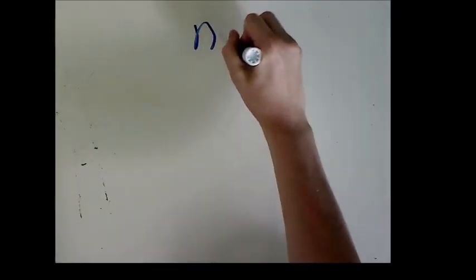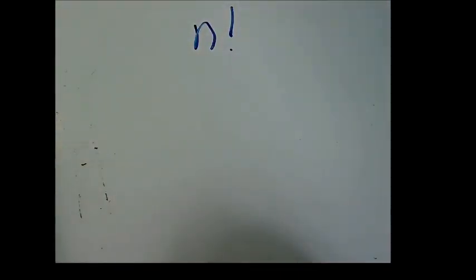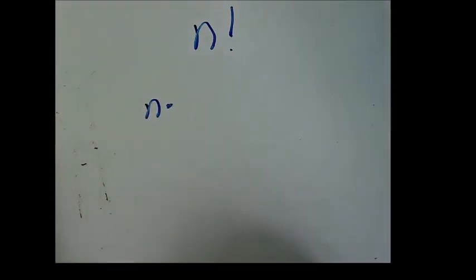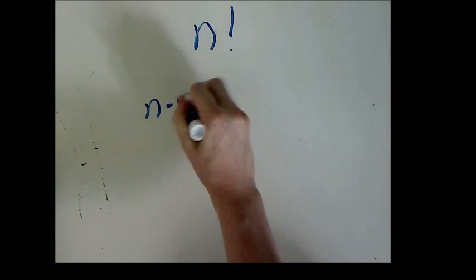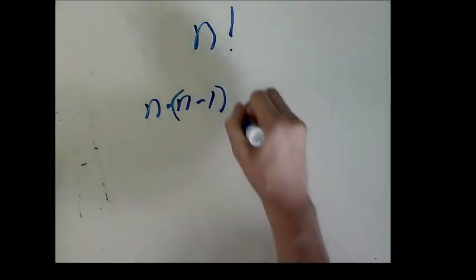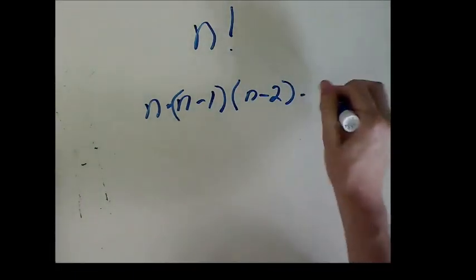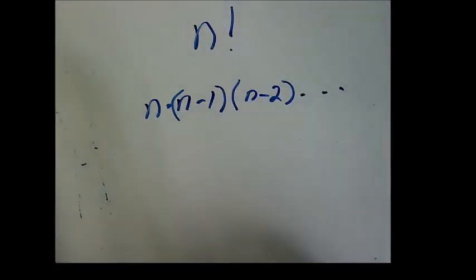One possible solution is to check every single path. However, there are n factorial of these, since for the starting city there are n options, and then for the next city to travel to there are n minus 1 options, and for the next city there are n minus 2 options, and so forth. And moreover, there are better algorithms than this to find the solution to this problem, but none of them are faster than an exponential time, or 2 to the n.